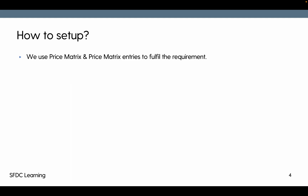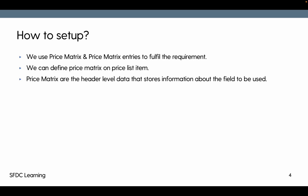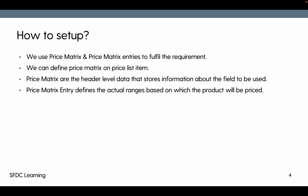To set up discrete or range-based pricing, we use price metrics and price metric entries. Price metrics can be defined at the price list item level, and price metric entries come under price metrics. Price metrics are the header-level data that store information about which field we want to use and based on the value of which field we want a price. Price metric entries are the actual ranges on which the product will be priced.